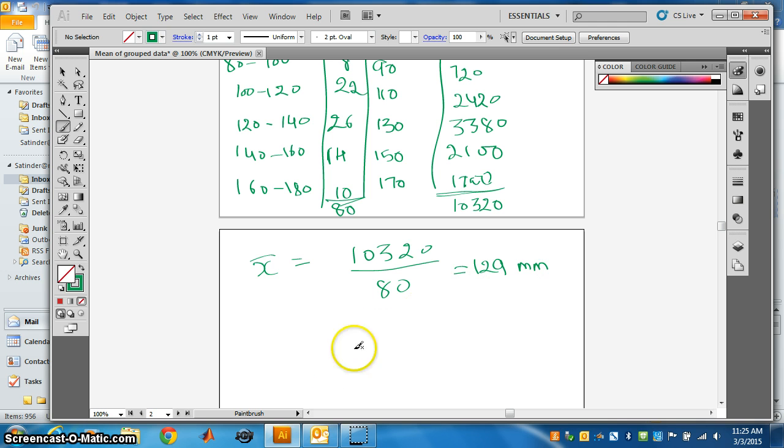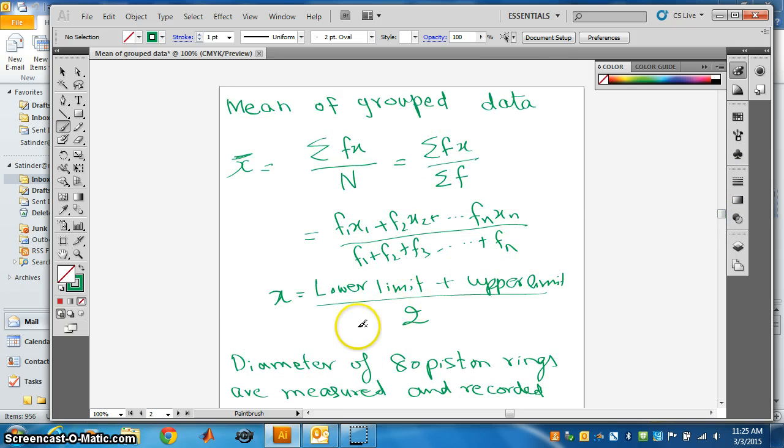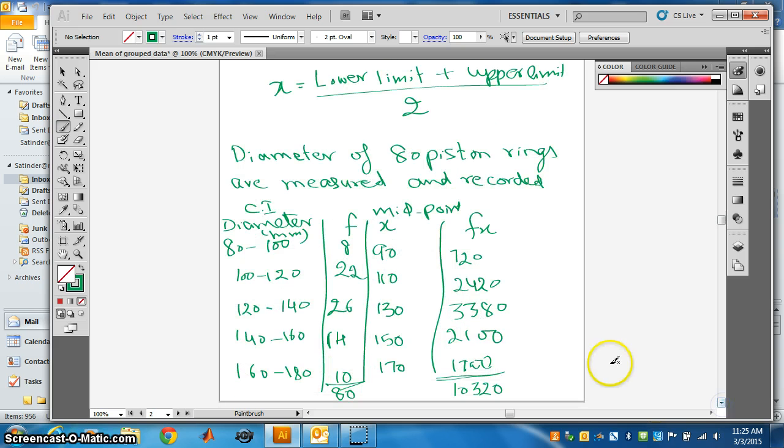Remember one thing: for mean you need to know the midpoint. How to find the midpoint? Midpoint is lower limit of the class interval plus upper limit divided by 2.